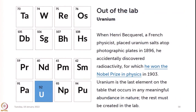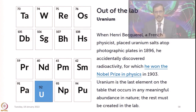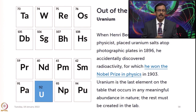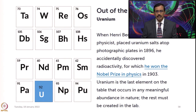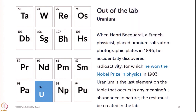About uranium: when Henry Becquerel, a French physicist, placed uranium salts atop photographic plates in 1896, he accidentally discovered radioactivity, for which he won the Nobel Prize in Physics in 1903. Uranium is the last element on the table that occurs in any meaningful abundance in nature — the rest must be created in the lab. Post-uranium elements are created in the laboratory.